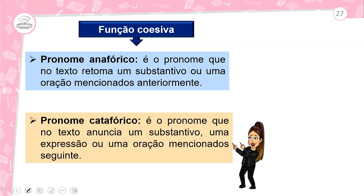A função coesiva do pronome pode ser anafórica ou catafórica. O pronome anafórico é aquele que no texto retoma um substantivo ou uma oração que já foi mencionada anteriormente. Já o pronome catafórico é o pronome que no texto anuncia um substantivo — primeiro aparece o pronome, para depois aparecer o substantivo, ou uma expressão, ou uma oração seguinte.